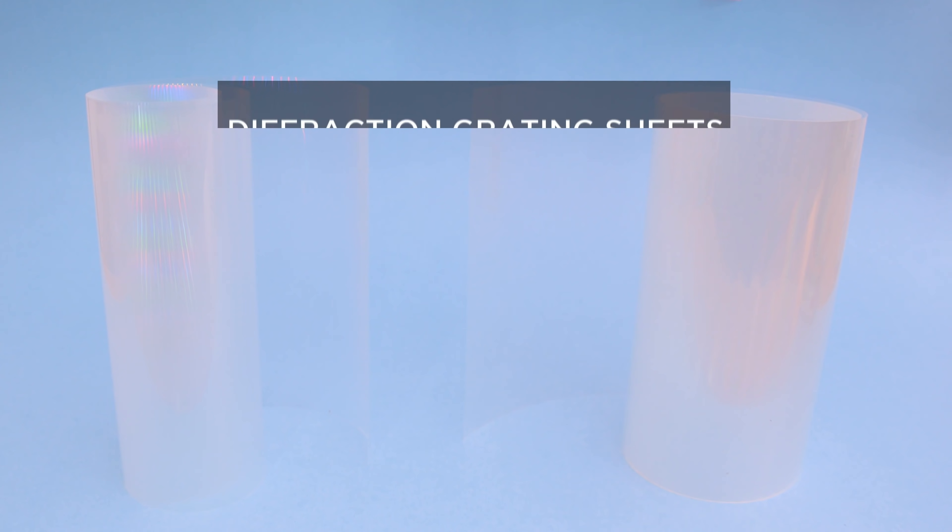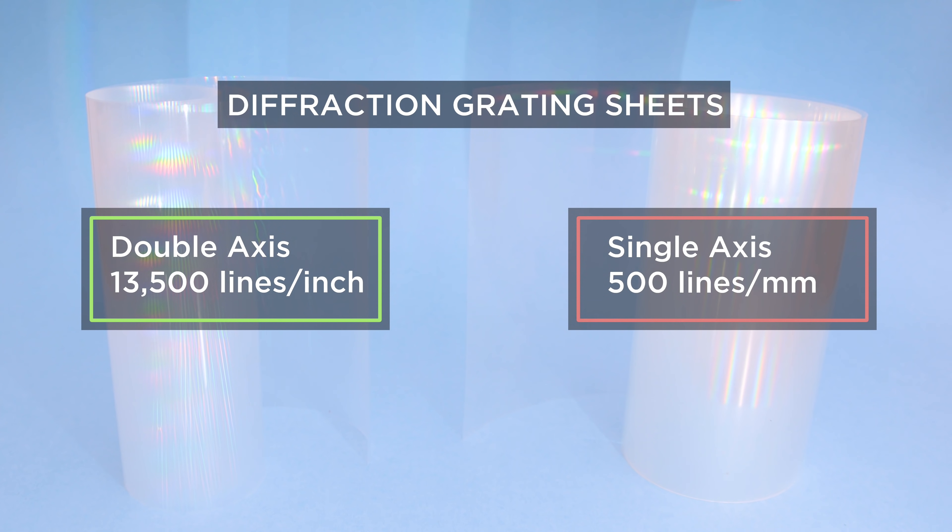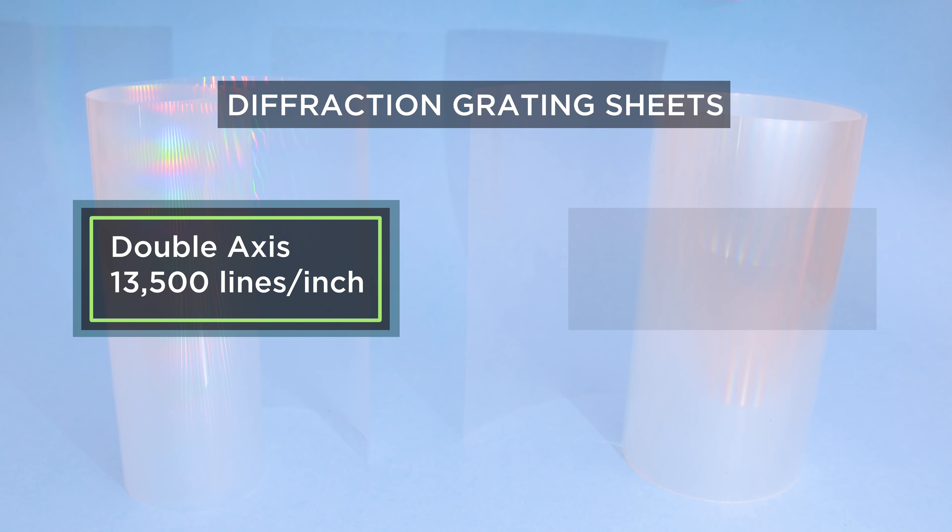So you can get a roll of this stuff online and use it for making DIY arts and crafts. In our tests, we're using the double-axis diffraction grating sheets. The single-axis sheets did not capture any of the texture. We suggest using the double-axis sheets with at least 10,000 lines per inch.